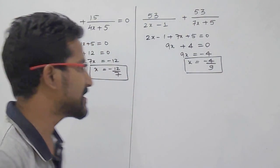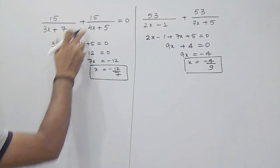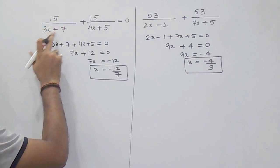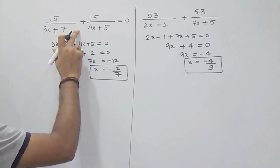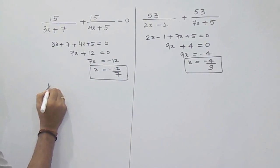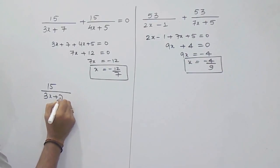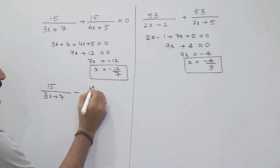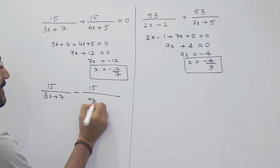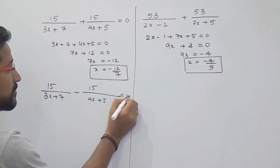Now for the same equation, if it is given that 15 upon 3x plus 7 minus—if it is minus—so what do you have to do? For example, 15 by 3x plus 7 minus 15 upon 4x plus 5 equals 0.